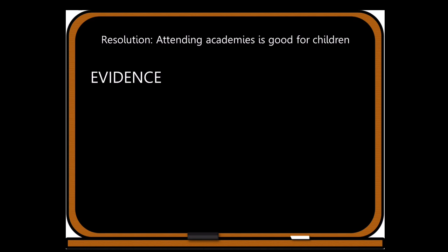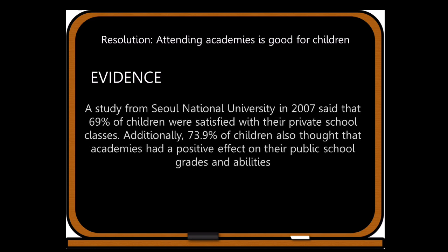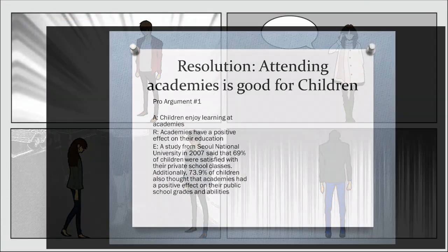Let's go back to the drawing board with our resolution: attending academies is good for children. When we find evidence, we need to make sure it supports the assertion and the reasoning. After doing much research, the evidence I found was this: a study from Seoul National University in 2007 said that 69% of children were satisfied with their private school classes. Additionally, 73.9% of children also thought that academies had a positive effect on their public school grades and abilities. As you can see, this evidence supports the assertion that children enjoy learning in academies, and it has an author — Seoul National University — and a date, 2007.